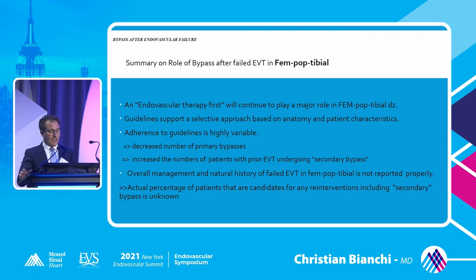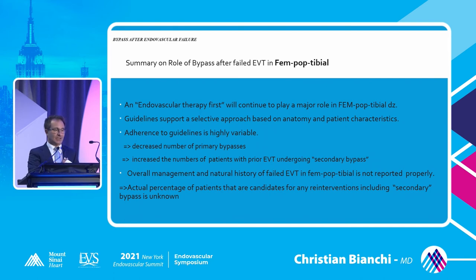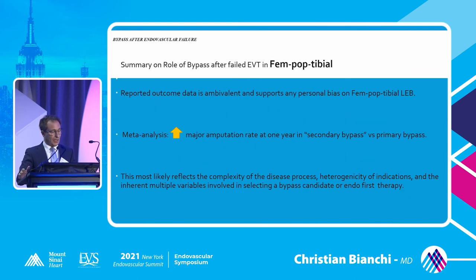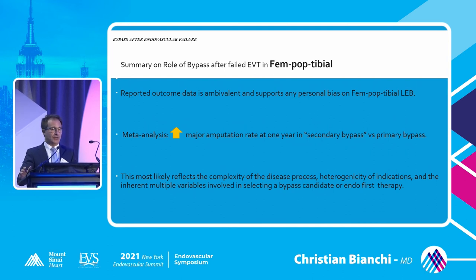For femoropopliteal failures, endovascular therapy first will continue to play a major role, and guidelines support a selective approach. The overall management of failed EVT for femoropopliteal disease is not well reported. The actual percentage of patients who are candidates for any re-intervention is unknown. In meta-analysis, there is an increase in major amputation rate at one year in secondary bypasses, most likely reflecting the complexity of disease, the indications, and the many variables in the decision-making process.